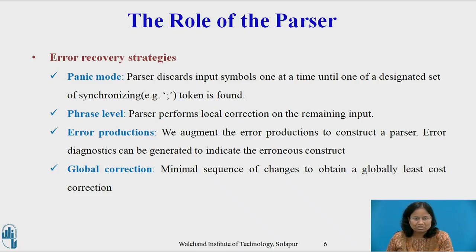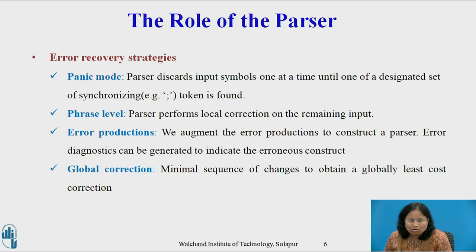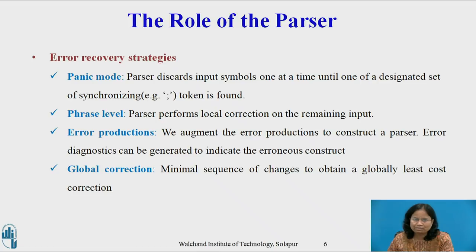Second, phrase level: on discovering an error, a parser performs local correction on the remaining input — it may replace a prefix of the remaining input by some string that allows the parser to continue. A typical local correction would be to replace a comma by a semicolon, delete an extraneous semicolon, or insert a missing semicolon. This strategy can correct any input string and has been used in several error-repairing compilers. Its major drawback is the difficulty in coping with situations where the actual error has occurred before the point of detection.